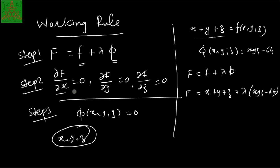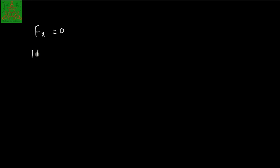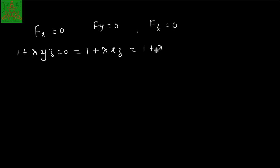The next task is to calculate Fx, Fy, and Fz and set them equal to 0. Fx = 1 + lambda*yz, Fy = 1 + lambda*xz, Fz = 1 + lambda*xy. Setting each to zero: 1 + lambda*yz = 0, 1 + lambda*xz = 0, 1 + lambda*xy = 0, together with xyz = 64. We now need to solve these 4 equations to find the values of x, y, z, and lambda.